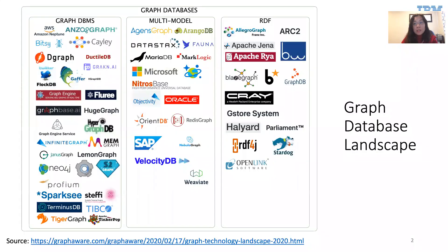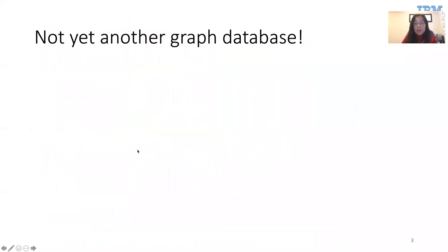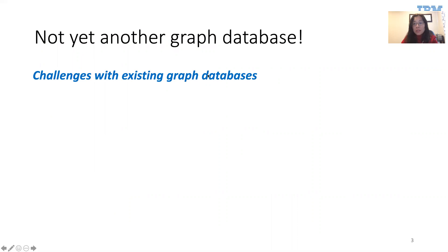I don't think I need to tell you why querying graph data is important. There's also no shortage of graph databases in the market today. One would ask, why would you guys build another graph database? Well, DB2 Graph is not yet another graph database. We saw two major challenges facing most of today's graph databases.